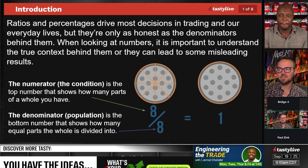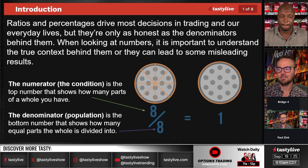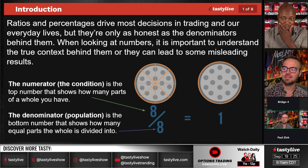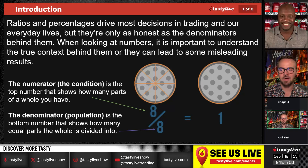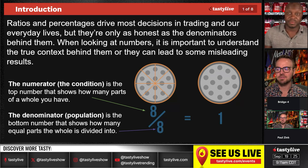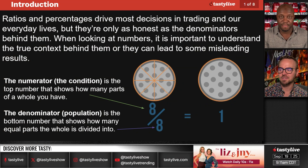Introduction: ratios and percentages drive most decisions in our trading and everyday lives, but they're only as honest as the denominators behind them. When looking at numbers, it's important to understand the true context behind them or they can lead to misleading results. The numerator is the top number showing how many parts of a whole you have — eight slices out of eight slices, that's a whole pizza, equals one. The denominator is the bottom number showing how many equal parts the whole is divided into. Numbers are numbers, but you always have to weigh them against the denominator to get the true scope of things.